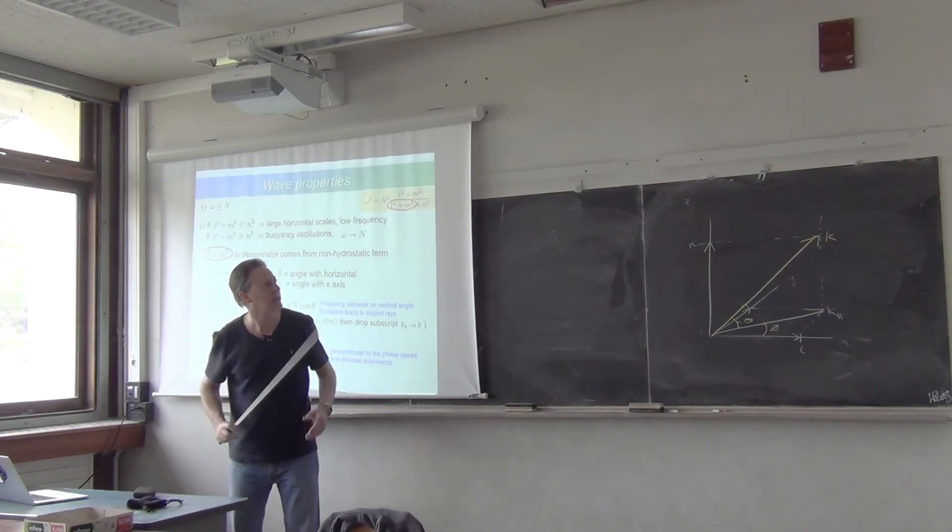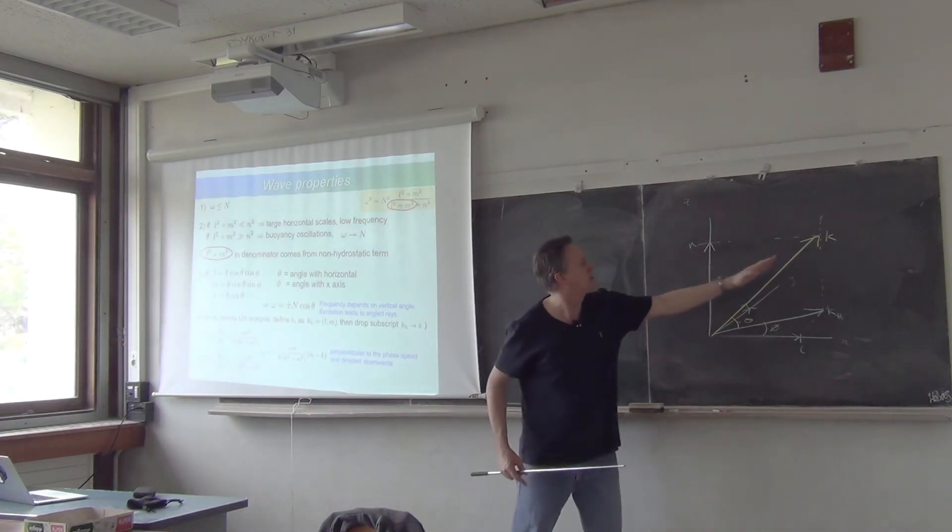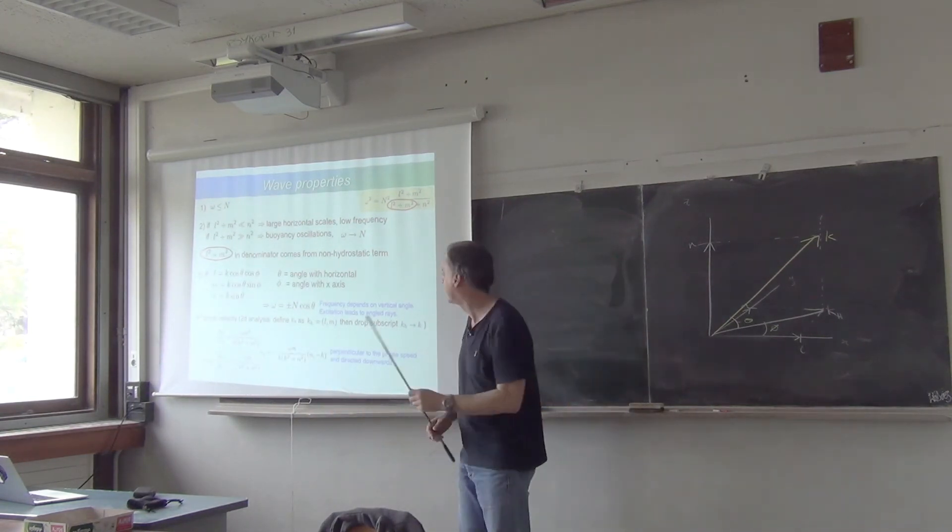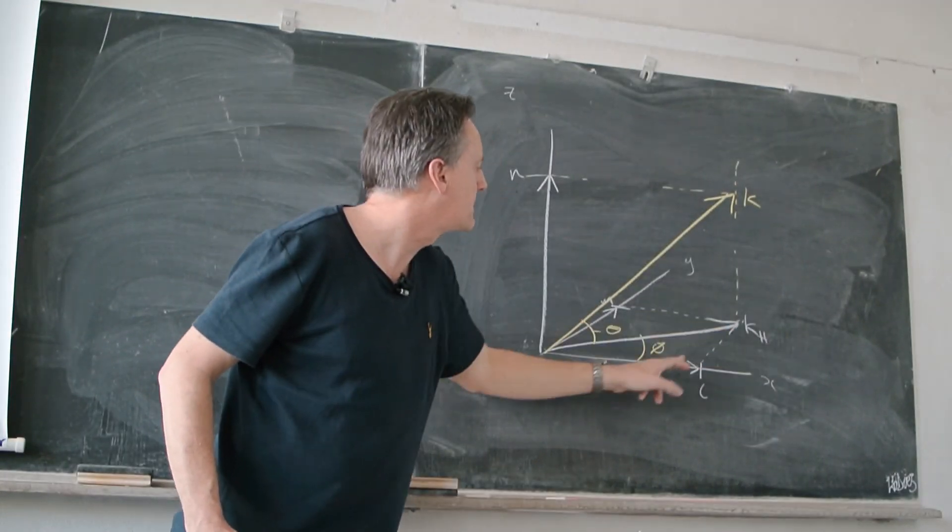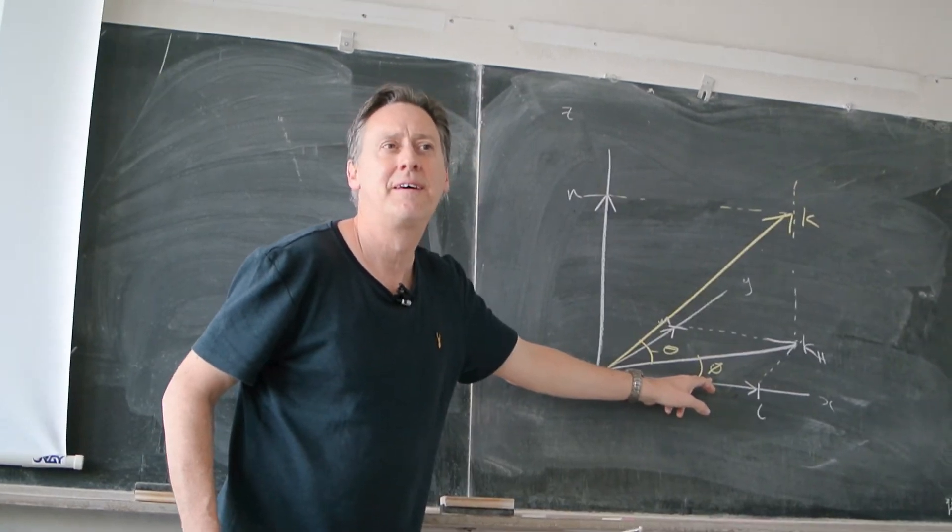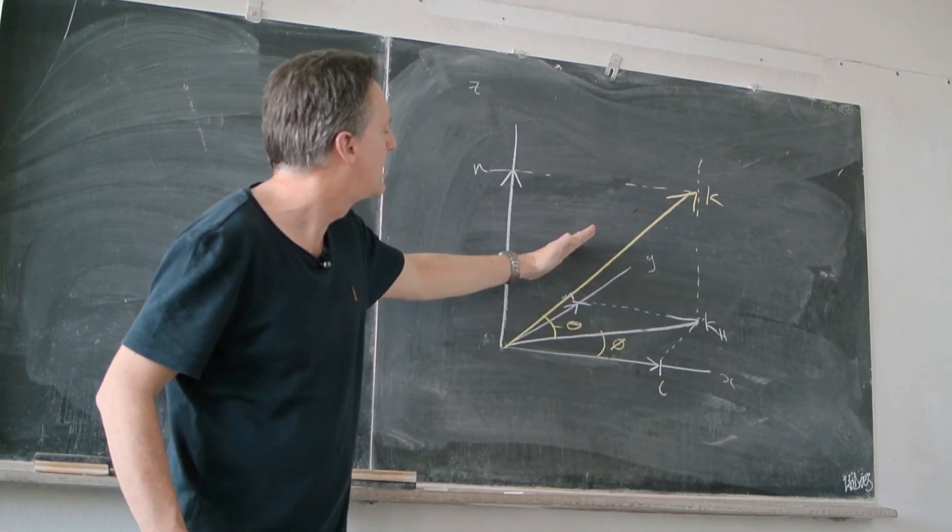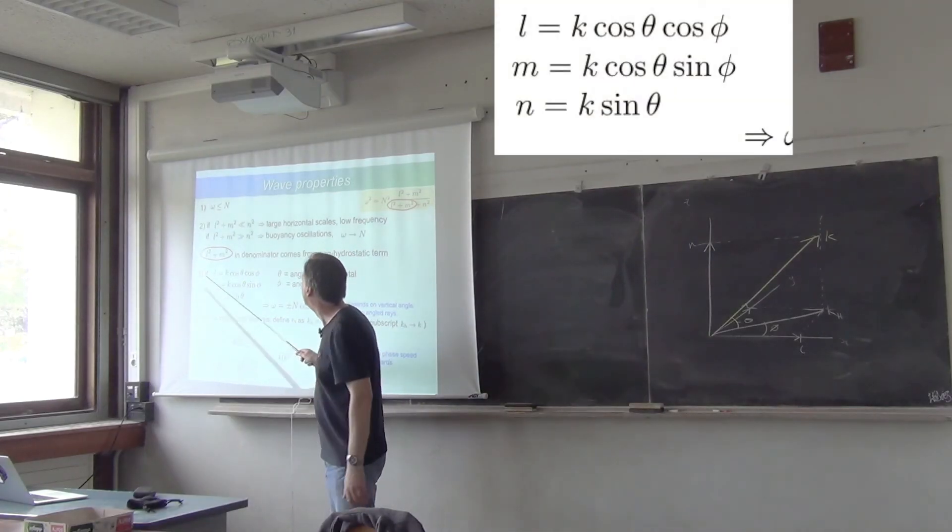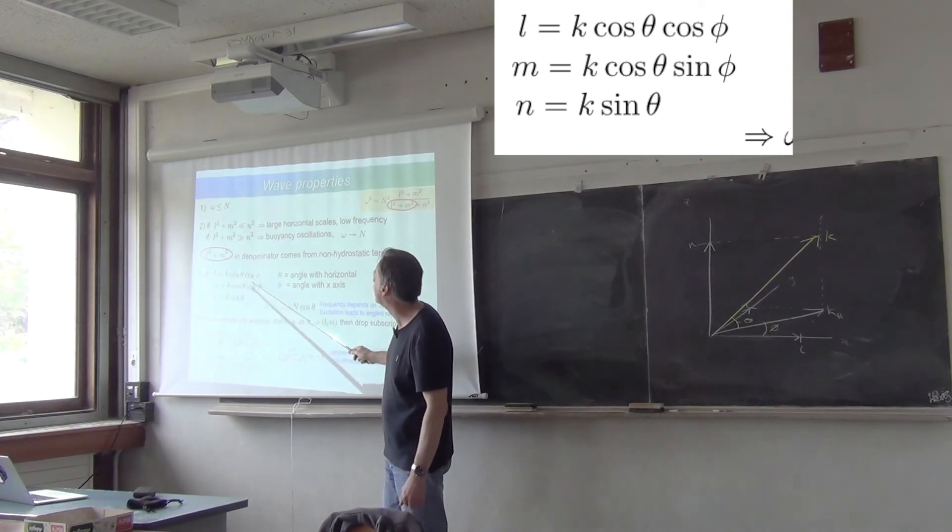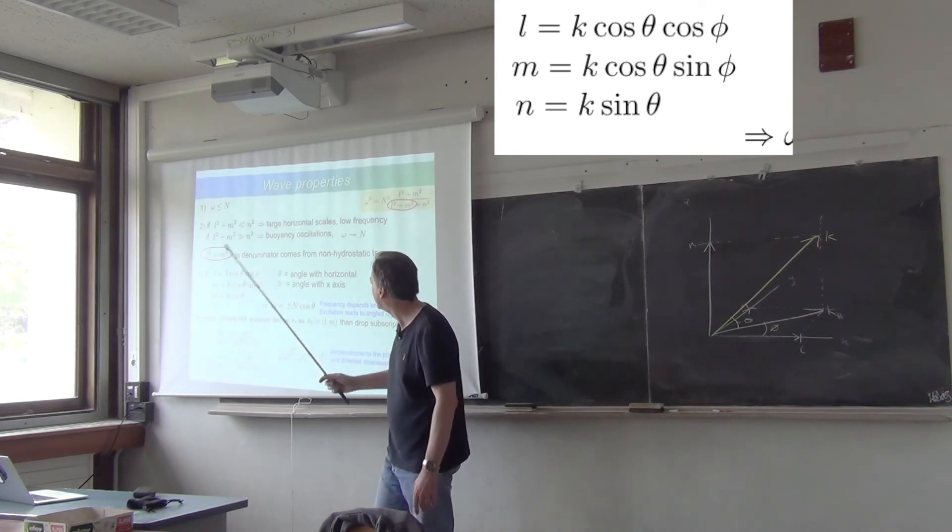And so you can see that to start with, n is k sin θ. And then l is kh times cos φ. And kh is k cos θ, so l will be k cos θ cos φ. It's all written down here. So we have l equals k cos θ cos φ, m equals k cos θ sin φ, and n is k sin θ.